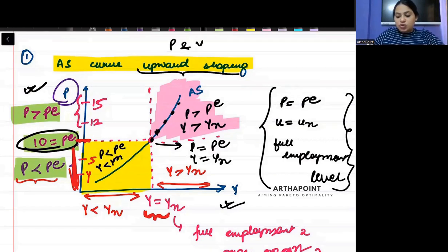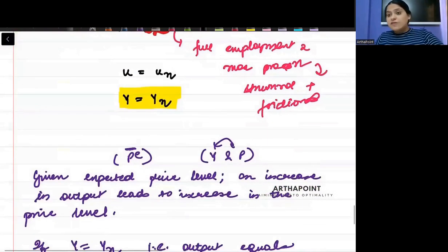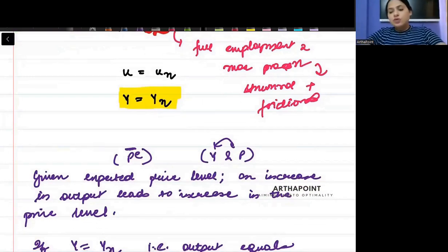If P or Y change, if P or Y will change, then I will move along the curve. But any other factor should lead to shift of the curve. Any other factor will lead to shift of my curve. Clear?